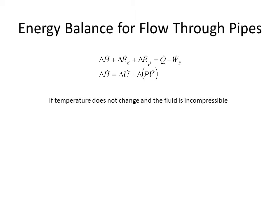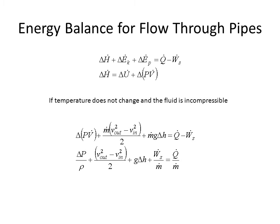If the temperature remains constant, therefore delta U will be equal to zero, and the fluid is incompressible, therefore the volumetric flow rate remains constant, we can rewrite our open system energy balance as follows, where the change in pressure times volumetric flow rate plus the change in kinetic energy plus the change in potential energy equals the heat added or removed from the system minus the shaft work.